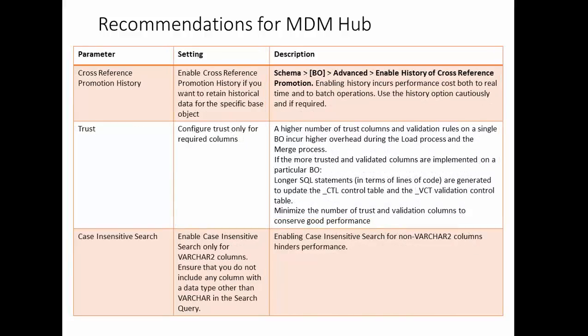The next important parameter is cross-reference promotional history. Enable this if you want to retain historical promotional data for a specific base subject — for example, how promotion behaves with specific trust states like -1, 0, 1. This is optional and not something you always need to enable.